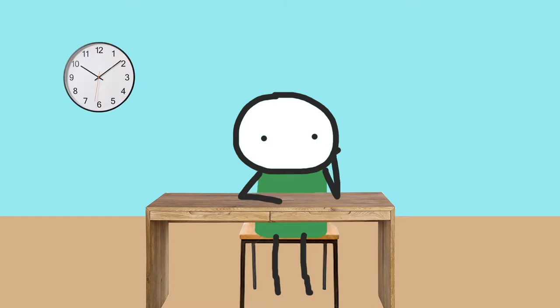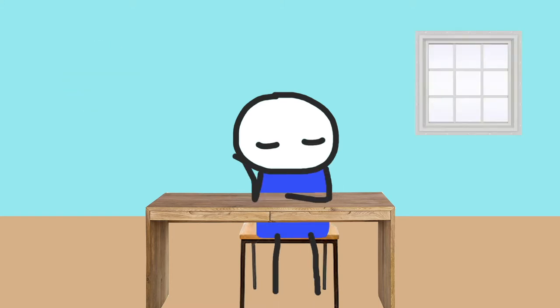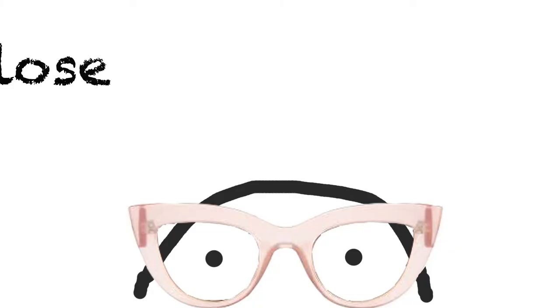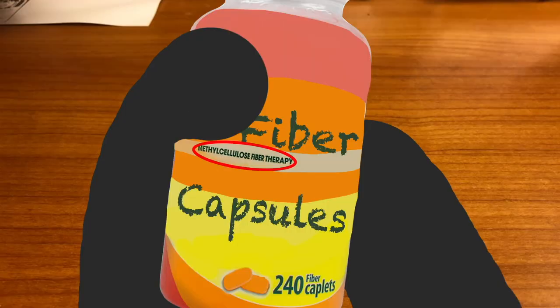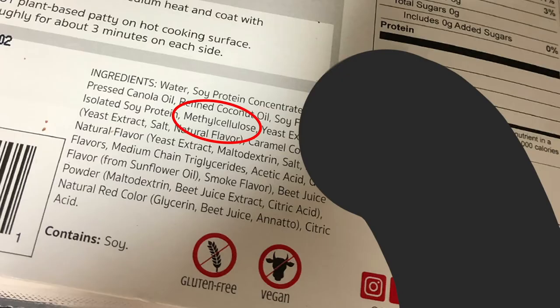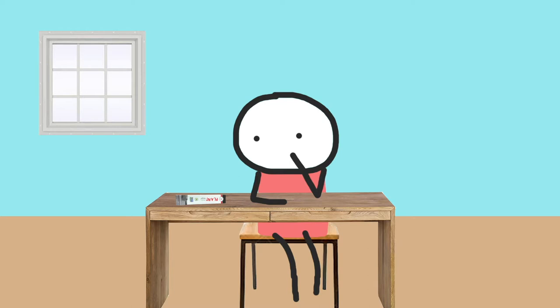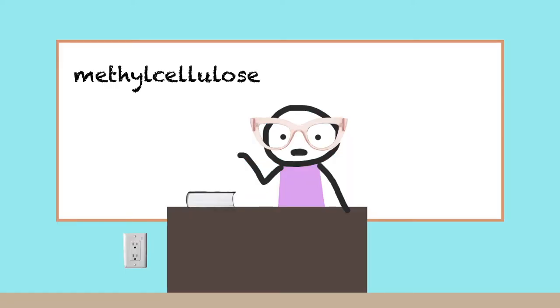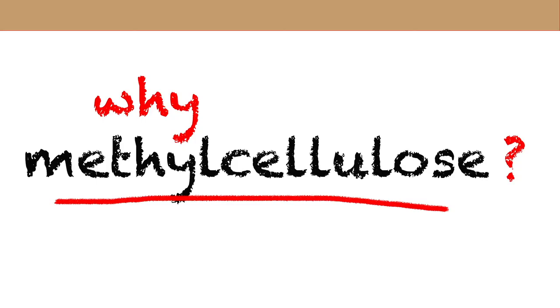For today's lesson I asked everyone to bring something that has methyl cellulose in it. I brought a face wash. I brought these fiber capsules — they help me poop. I brought this bag of cement. I brought plant-based meat, but I feel weird eating this now that I know the same ingredient is in those other things too. Is it safe? This is exactly why we're looking at methyl cellulose today, because it has such a broad range of uses. Before I answer your question, let's explore why it's used in so many products.